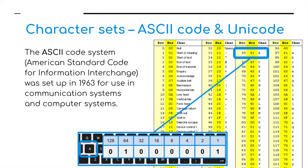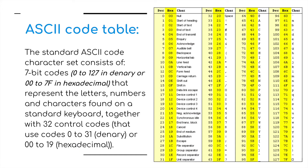The ASCII code system, the American Standard Code for Information Interchange, was set up back in 1963 and it was used for communication systems and computer systems. The character capital A has a decimal value of 65 and a hexadecimal value of 41, converted into binary as shown. The standard ASCII code character set consists of seven-bit codes, so any number from 0 to 127 in denary or 00 to 7F in hexadecimal, allowing for 128 different characters found on the standard keyboard.